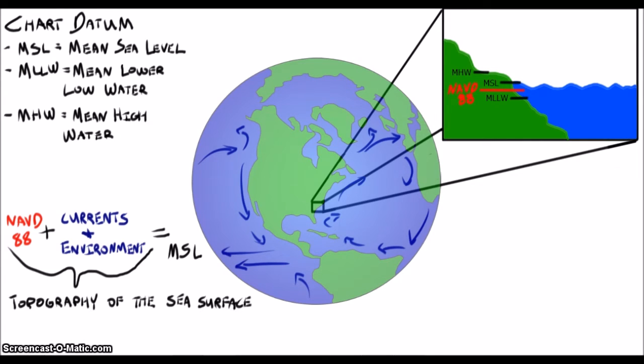Mean lower low water isn't really flat with respect to gravity either. In fact, in some places, like the Bay of Fundy, the tidal range is so huge that mean lower low water is far below mean sea level. In other areas, there's not much tidal variation at all, so mean lower low water is pretty close to mean sea level.